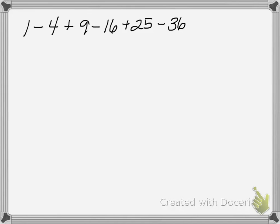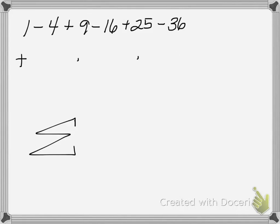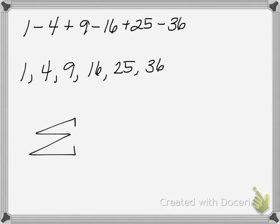Here's another series that we want to write using sigma notation. This is an interesting one because the terms alternate signs: we start with positive 1, then negative 4, then positive 9, then negative 16, and so on — an alternating sign pattern. When you have alternating signs, I recommend ignoring the signs at first. So let's look at just 1, 4, 9, 16, 25, and see if we can establish the pattern without worrying about signs initially.